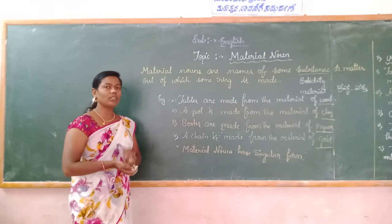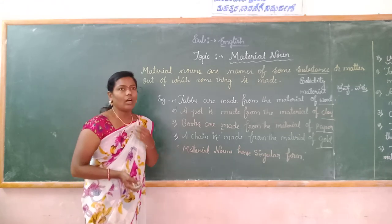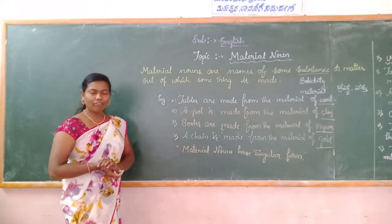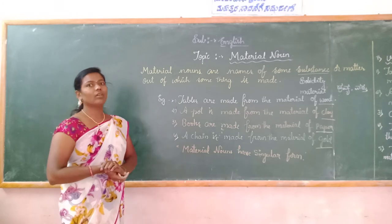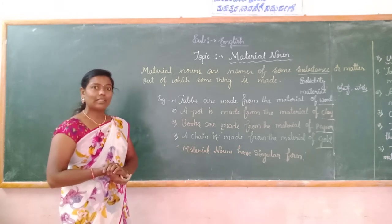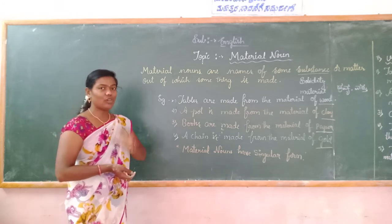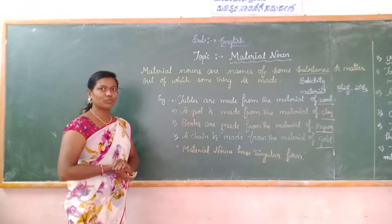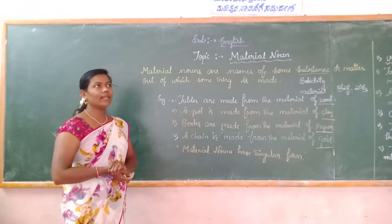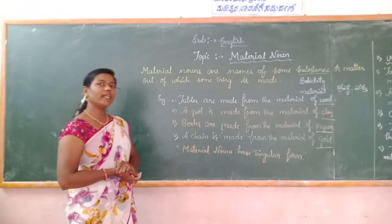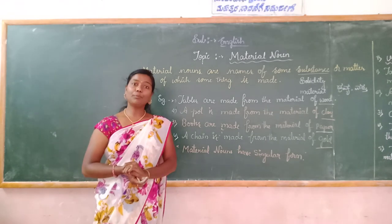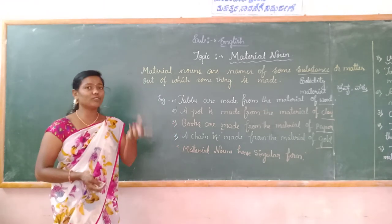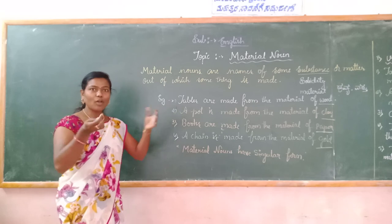Another example: mirrors are made from the material of glass. Glass is the material used to make a mirror. And a bowl is made from the material of flour. Flour is the material used to make it.